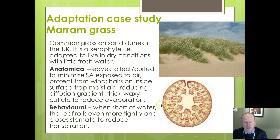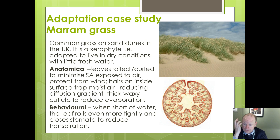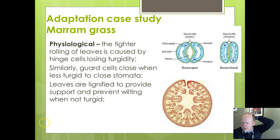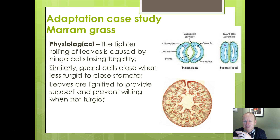Marram grass has rolled or curled-up leaves — curled into a tube shape — with small hairs on the inside that trap moist air, reducing the amount of water diffusing out by changing the water potential of the surrounding air so less water evaporates. There is also a thick waxy cuticle on the outside to reduce evaporation further. When short of water, the leaf rolls even more tightly. Particular cells called hinge cells change shape to close the stomata and reduce transpiration — a combination of physiological and behavioural adaptation. The leaves are also lignified, given strength with woody material to prevent wilting and drooping when not turgid.